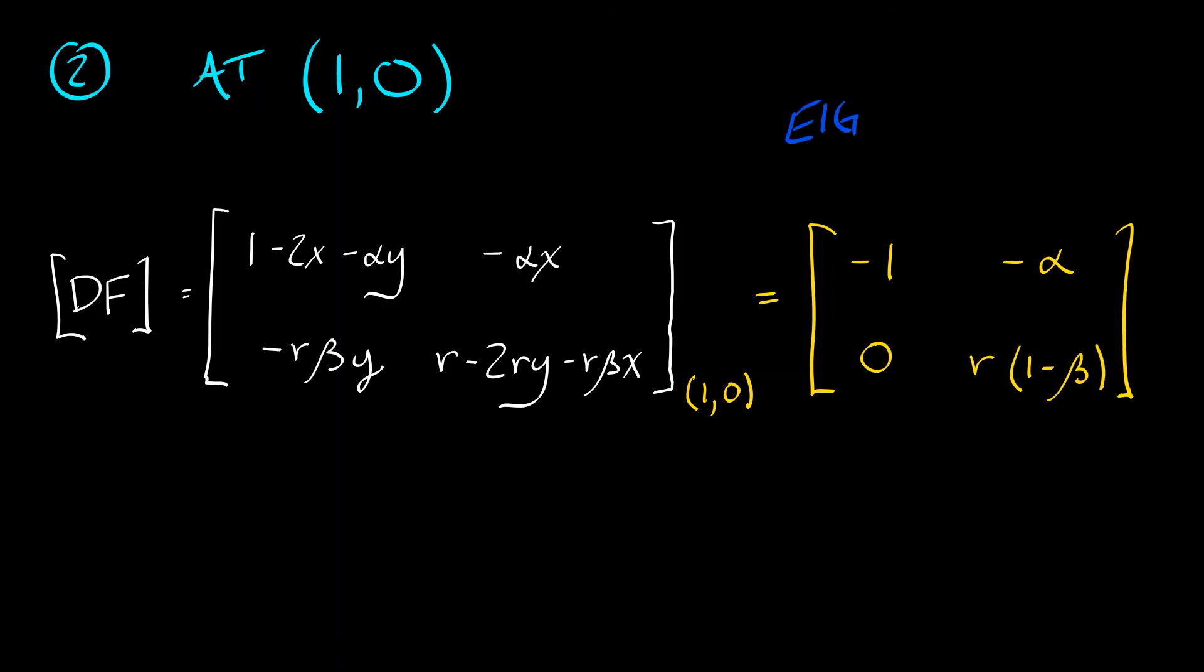Now this is an upper triangular matrix. That means that we can read off the eigenvalues directly. We can see that one of them is negative 1 and the other might be positive or it might be negative depending on beta. Here's where it starts getting interesting. If beta is less than 1, then that second eigenvalue is positive and that means we have a saddle point.